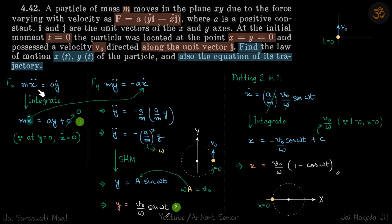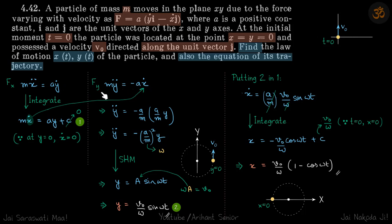We want an equation with a single variable. If we integrate one equation we'll get a term we can substitute into the other. For example, integrating the y-equation gives m·ẏ = -a·x + C, and then we can replace ẏ in the x-equation.